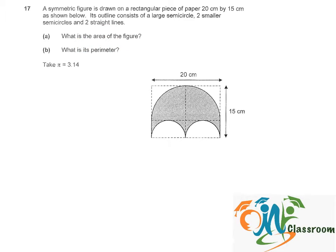Before we attempt this question, let's label the radius for the big circle and the small circle. So the radius for the big circle is actually 20 divided by 2, 10cm. And the radius for the small circle is 10 divided by 2, 5cm.